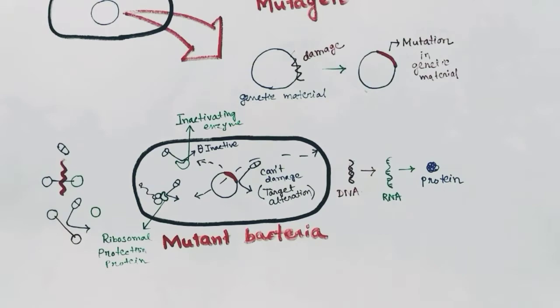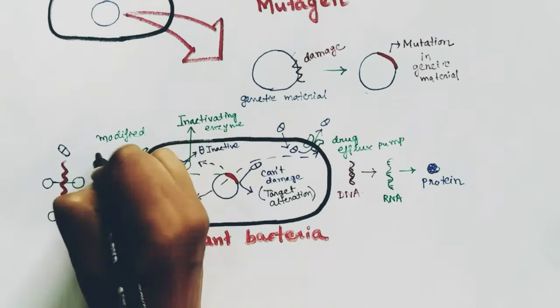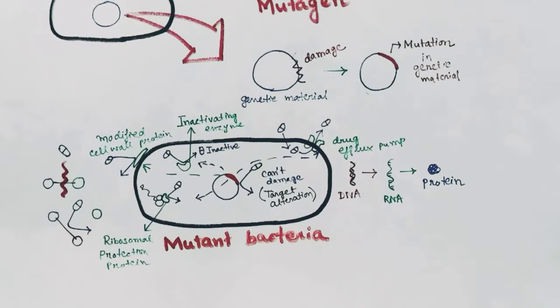Or this bacteria can also activate efflux channels or efflux pumps, which will pump out the antibiotics that have already entered inside the bacteria. Or it can also give rise to proteins which protect the cell walls from antibiotics so that the cell walls cannot get broken by the antibiotics. All these mechanisms are adopted by the bacteria to make it resistant against the antibiotic.